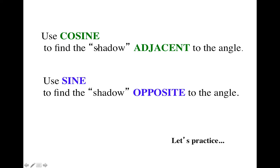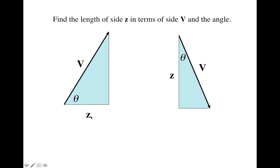Let's mess around with this. If you're finding the shadow on the adjacent one, it's going to be cosine. The shadow on the opposite side is going to be sine. What we're supposed to do is figure out how long this side Z is in terms of the other things. Z happens to be adjacent to the known angle, so the shadow down here is going to be V cosine theta. Try the next one — you're supposed to figure out how long Z is. You notice Z is adjacent to the known angle again, so you actually get the same answer: it's V cosine theta because it's adjacent to the known angle.